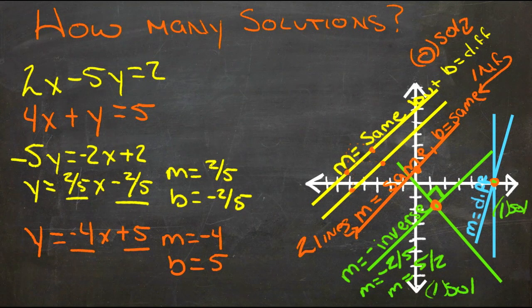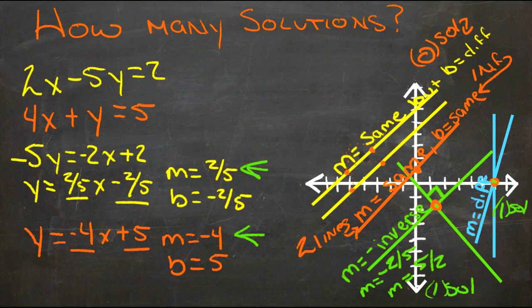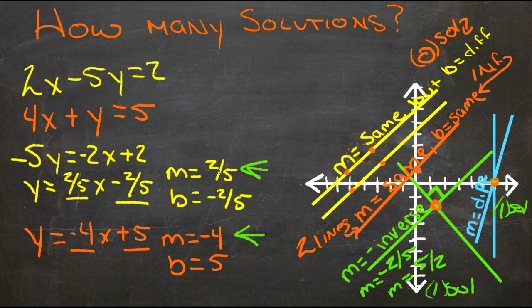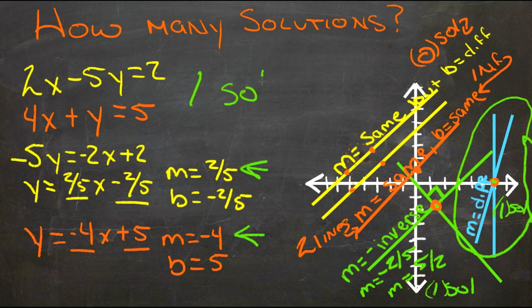So if we look at our two examples here, we see that our m is different—we have 2 fifths for one of them and negative 4 for the other. Since negative 4 is not the negative inverse of 2 fifths, what we have is a case where the lines are skew, and there's one solution.